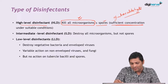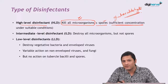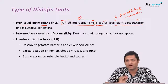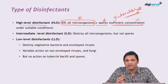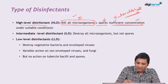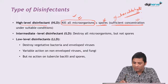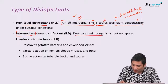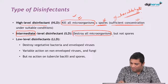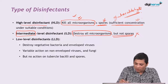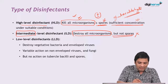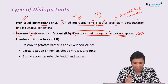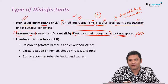Glutaraldehyde cannot kill spores ordinarily, but if you improve the concentration and duration of contact, it will be able to kill spores. Other than spores, it kills all other microorganisms — spore killing is plus or minus for high level disinfectants. Intermediate level disinfectants can kill all microorganisms but will not be able to kill spores. If spore killing is plus or minus, it is high level; if spores cannot be killed but all other microorganisms are killed, it is classified as an intermediate level disinfectant.